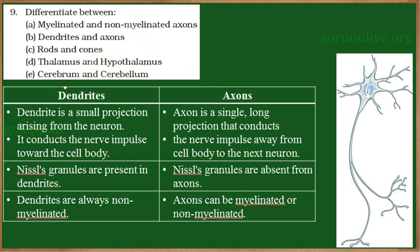The next comparison is dendrites and axons. The nerve cell has two regions: the cell body, which contains the nucleus, cell organelles, and cytoplasm; and the cell processing unit, which includes the dendrites and axons. A dendrite is a small projection arising from the neuron and conducts the nerve impulse towards the cell body. An axon is a single long projection that conducts the nerve impulse away from the cell body to the next neuron.